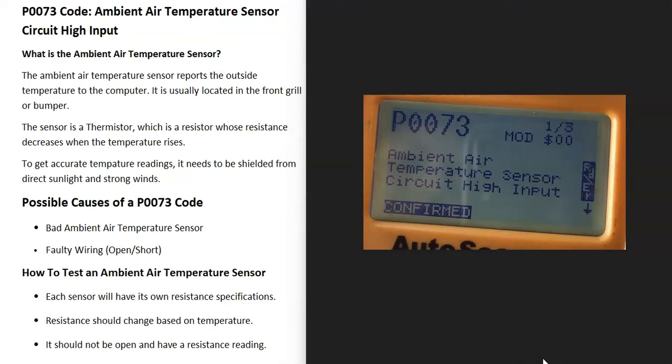Today I'm talking about a P0073 code, what it is, and how you go about fixing it. So what is a P0073 code? It's an ambient air temperature sensor circuit high input. What does this mean?